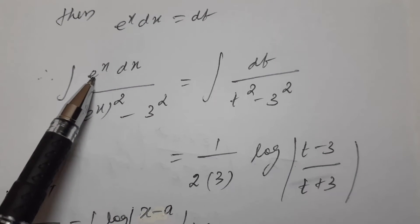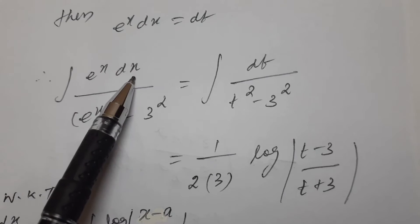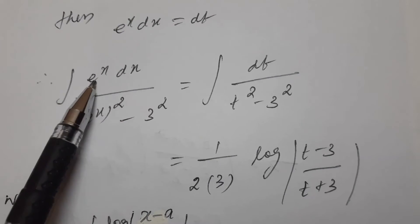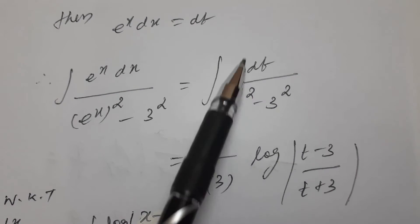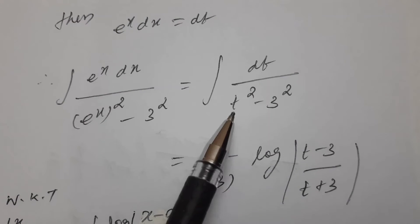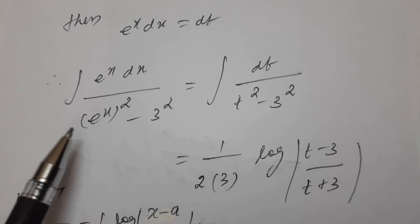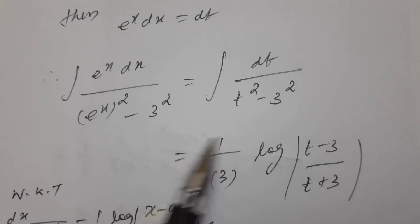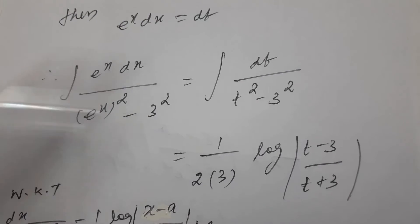The e power x in the numerator is taken care of. So e power x dx is equal to dt, divided by e power x whole square — that is t square — minus 9, which is 3 square.